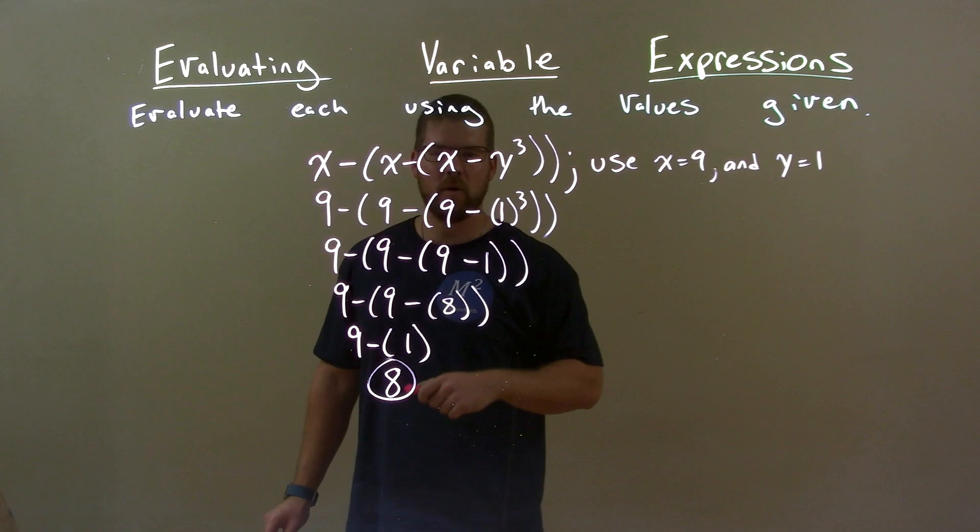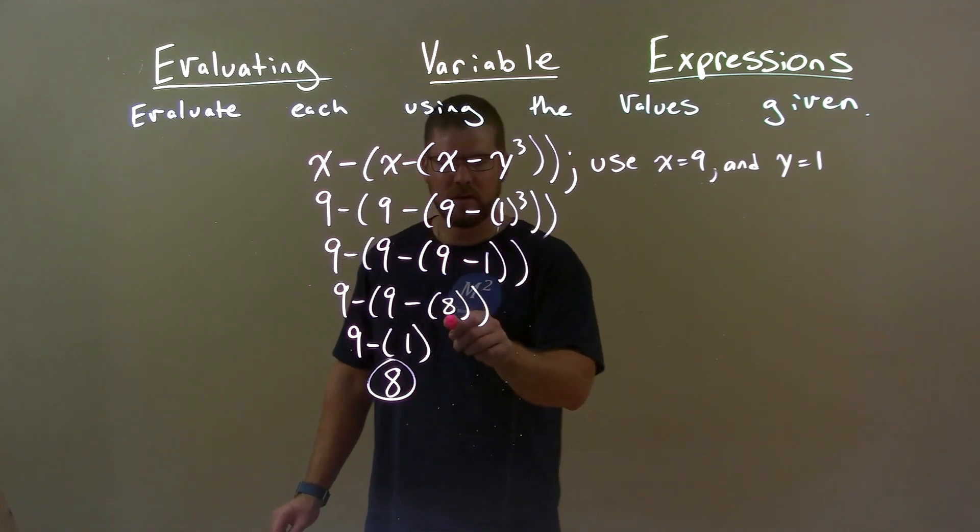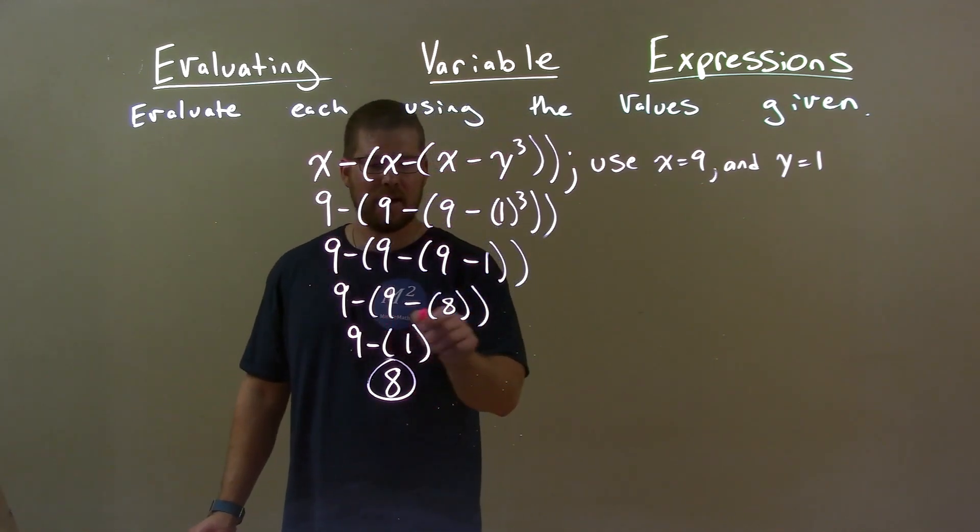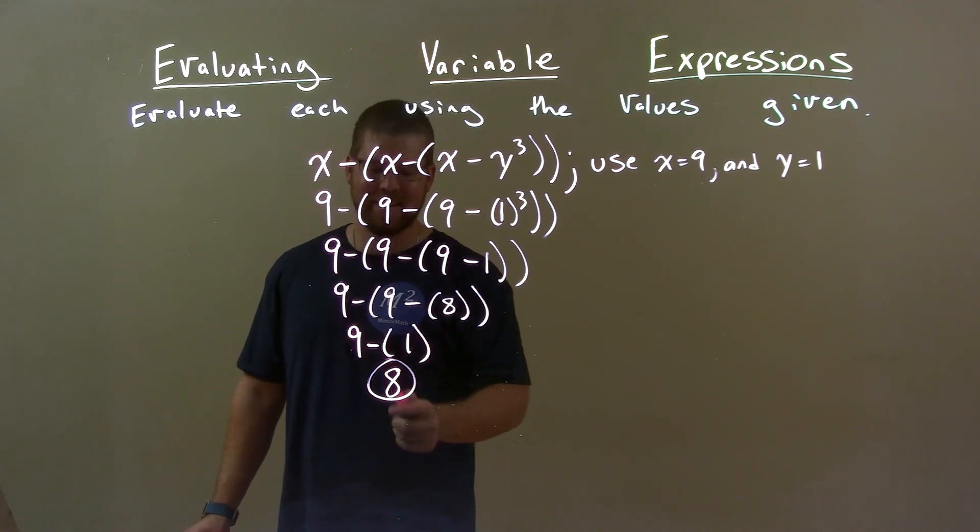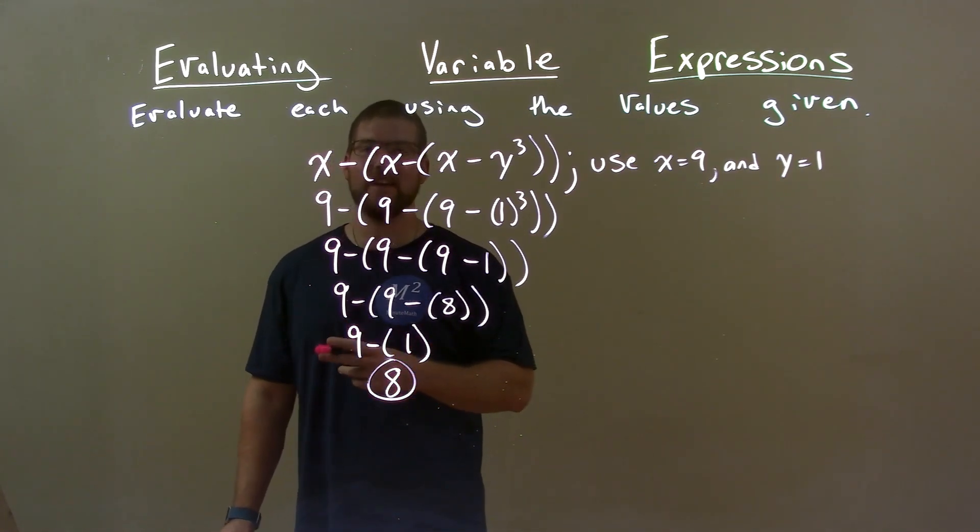1 to the third was first, which is 1. Then 9 minus 1 is 8. Then 9 minus 8 is 1. And 9 minus 1 is 8. So again, final answer here is just 8.